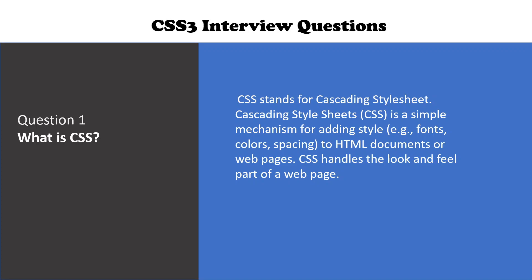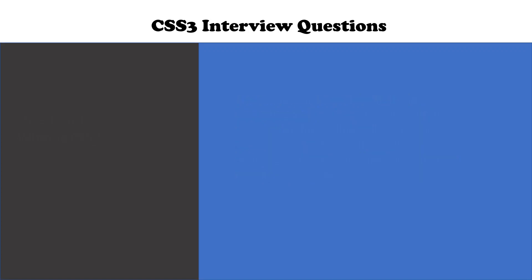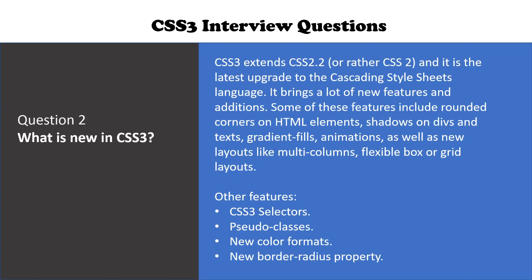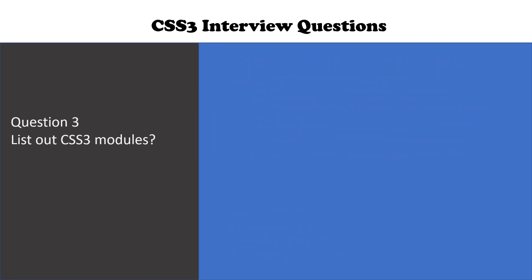The next question is: what is new in CSS3? CSS3 extends CSS 2.2 and it is the latest upgrade of the CSS language. It brings a lot of new features and additions. Some of these features include rounded corners on HTML elements, shadow on divs and text, gradient fills, animations, as well as new layouts such as multi-column layout, flexible block box, or grid layouts. Other features are CSS3 selectors, pseudo classes, new color formats, and the new border-radius property.